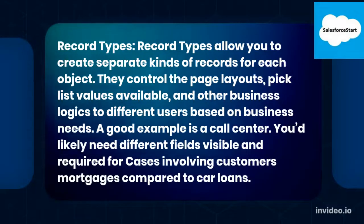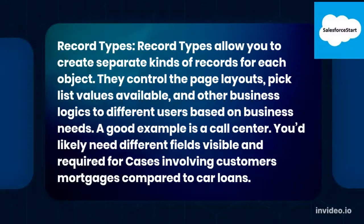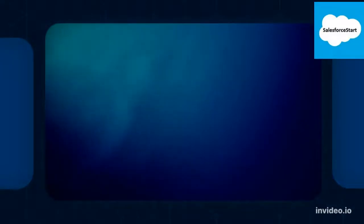Record Types: Record types allow you to create separate kinds of records for each object. They control the page layouts, picklist values available, and other business logic for different users based on business needs. A good example is a call center — you'd likely need different fields visible and required for cases involving customers' mortgages compared to car loans.